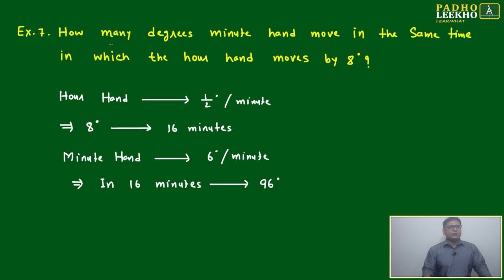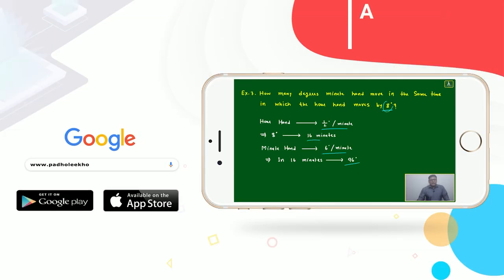How many degrees does the minute hand move in the same time in which the hour hand moves by 8 degrees? A simple calculation: hour hand is half degree per minute. 8 degrees equals 16 minutes. Minute hand is 6 degrees per minute. 16 minutes equals 96 degrees. This means if the hour hand is taking 8 degrees, in the same time the minute hand will move by 96 degrees.